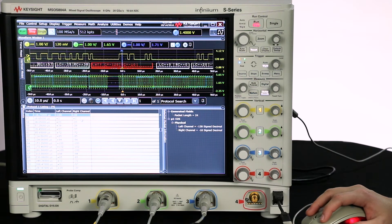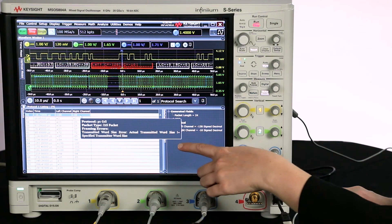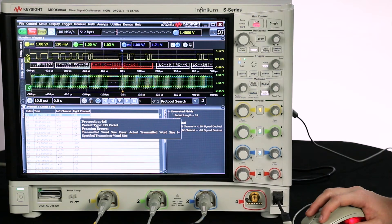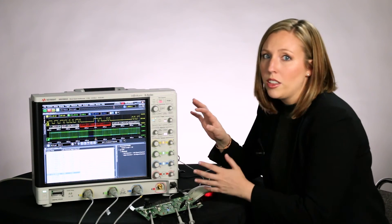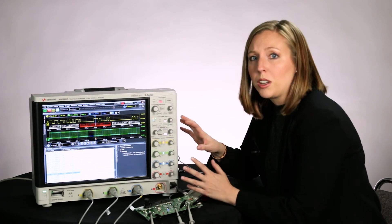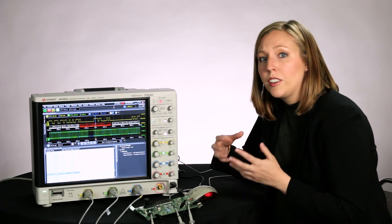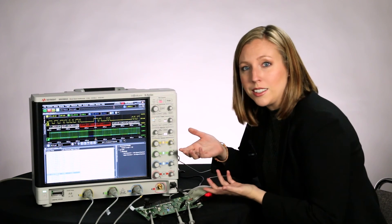And if we hover over the error in the lister, we can see that it's a transmitted word size error. So now that we have all this information from the scope, we can go back into our design and fix any issues that we found in our analysis.